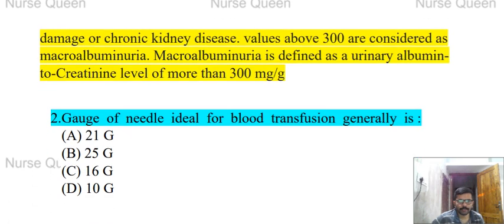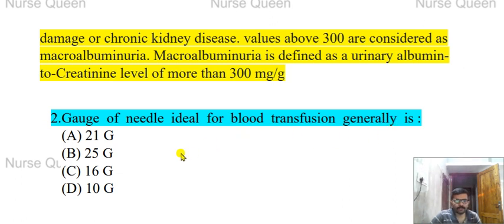Next question: the gauge of needle ideal for blood transfusion generally. Options: 21 gauge, 25 gauge, 16 gauge, or 10 gauge. For blood transfusion, the needle size is 16 gauge.